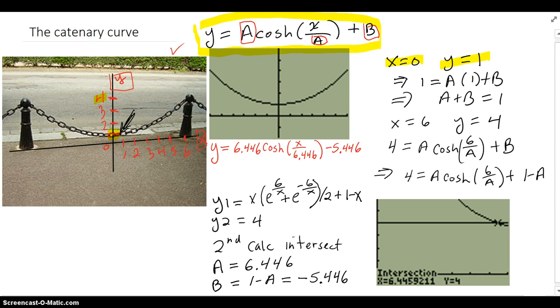So if you remember your properties of the cosh, when X is 0 and you plug that in here, the cosh of 0 is 1. And I want that to come out to be 1 in my Y value. So A times 1 plus B has to turn out to be 1.